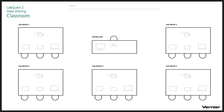For example, here we have five lab groups in a classroom with one LabQuest at each table. Let's take a look at what happens while each group of students are collecting data during a science experiment.